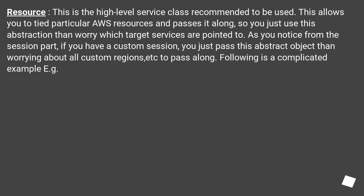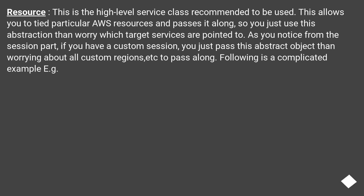Resource is the high-level service class recommended for use. This allows you to target particular AWS resources and pass them along, so you use this abstraction without worrying about which target services are pointed to. As shown with the session part, if you have a custom session, you just pass this abstract object without worrying about custom regions, etc.